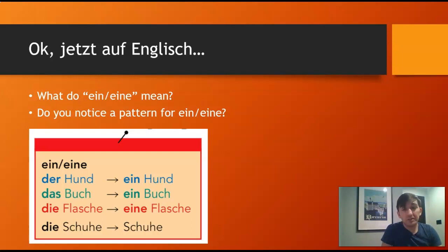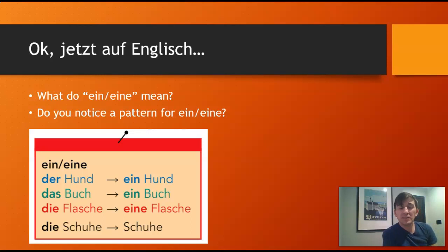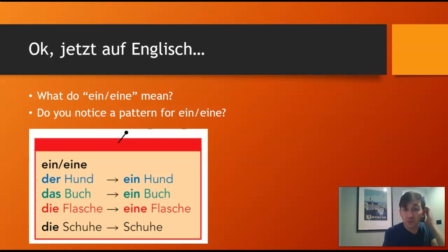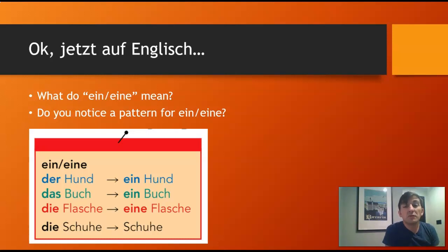Die Flasche turns into eine Flasche. Now, think about this: Schuhe means shoes — it's plural. So we wouldn't say 'a shoes', just like we wouldn't say 'a dogs', 'a books', 'a bottles'. We would just say shoes, books, bottles. So there is no form of ein when there's a plural.